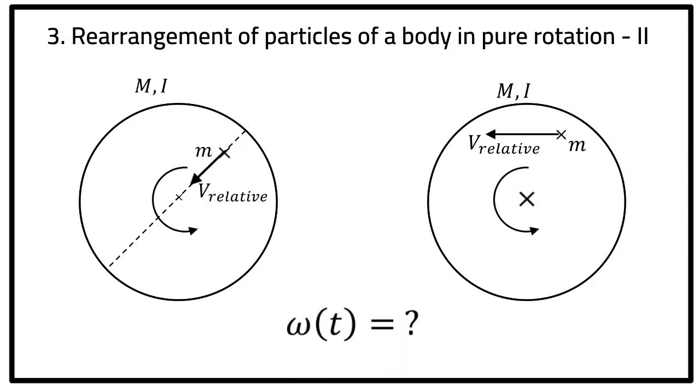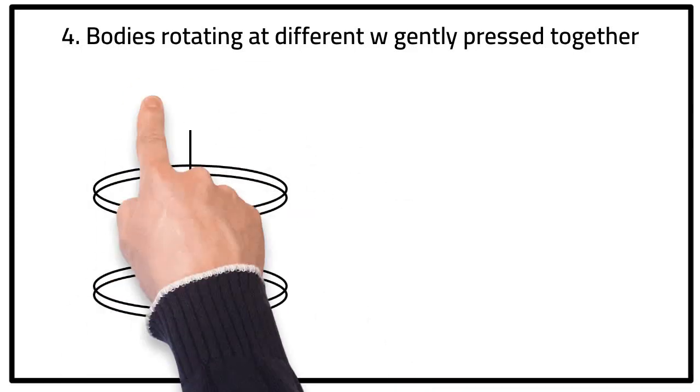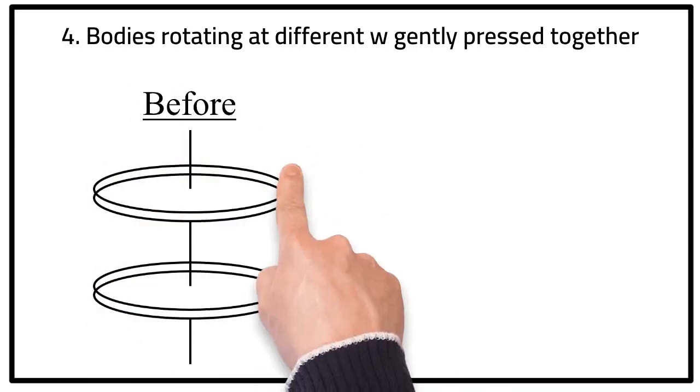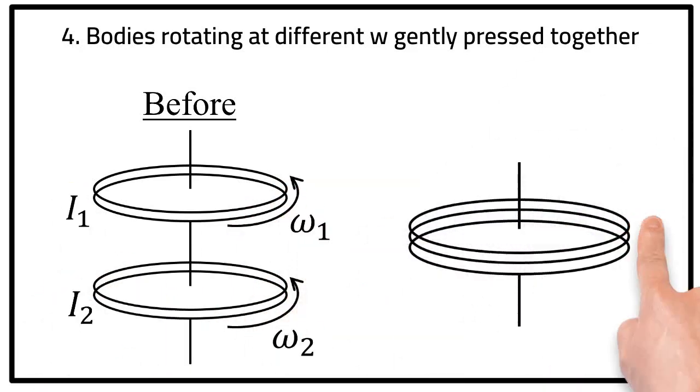With that, let's talk about scenarios wherein two rotating masses, for example discs, coalesce together. That is, they are gently pressed against each other, and the friction force between the two causes the two discs to achieve a common angular speed. But remember that if you consider two discs together as your system, then the frictional force and corresponding torque are internal and as such will not affect the overall angular momentum of the system, that is sum of the angular momentum of the two rotating masses or discs.